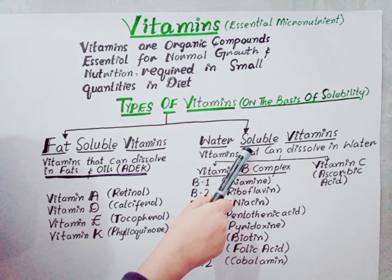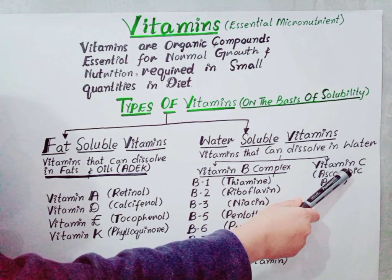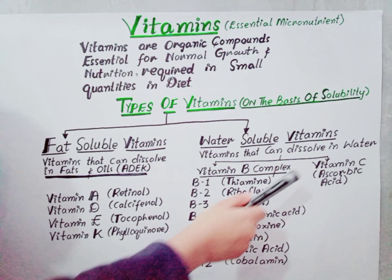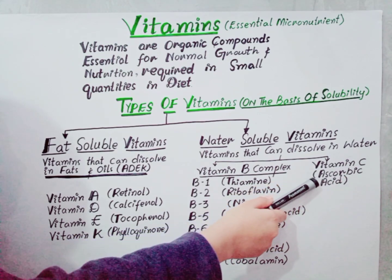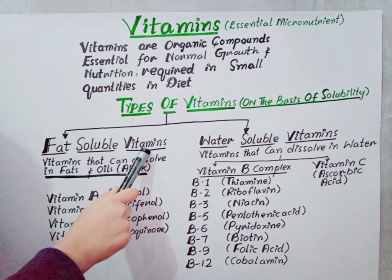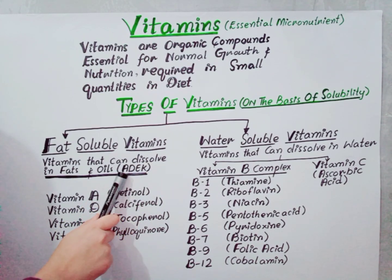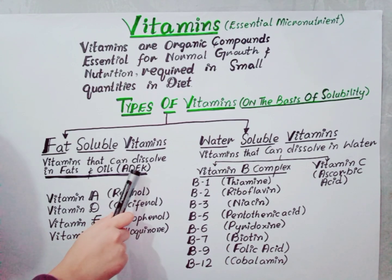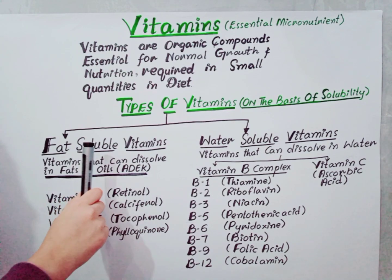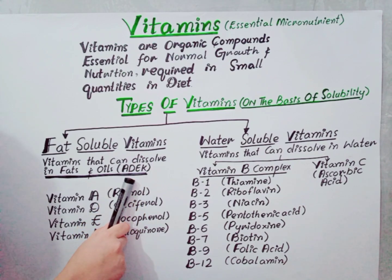In water-soluble vitamins, we have two categories: vitamin B complex and vitamin C. The vitamin B complex further has different types, while vitamin C is also known as ascorbic acid. We can easily memorize the fat-soluble vitamins through the mnemonic ADEK — A for vitamin A, D for vitamin D, E for vitamin E, and K for vitamin K.